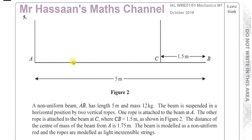The beam is supported in a horizontal position by two vertical ropes — ropes rather than supports as found in most questions. One rope is attached at A, at the end, and the other rope is attached at C, which is 1.5 meters in from B. The distance of the center of mass from A is 1.75 meters.